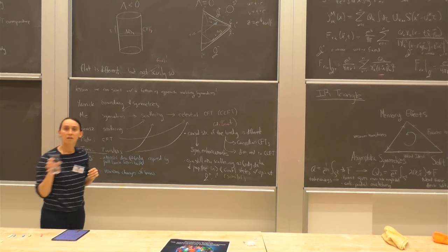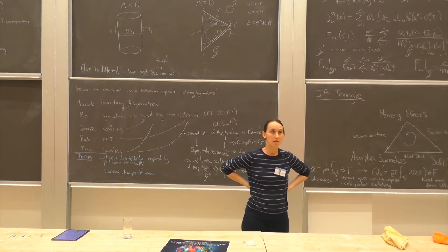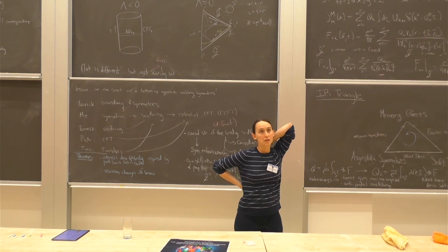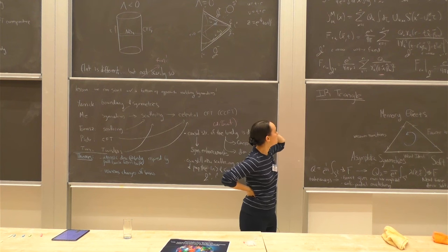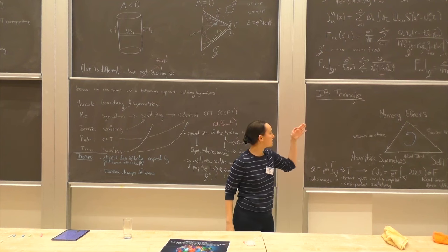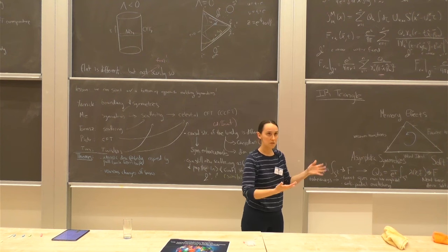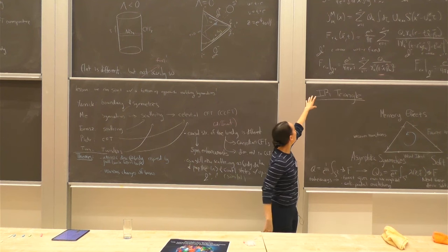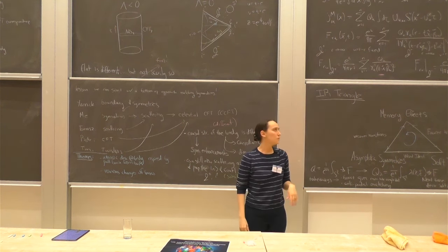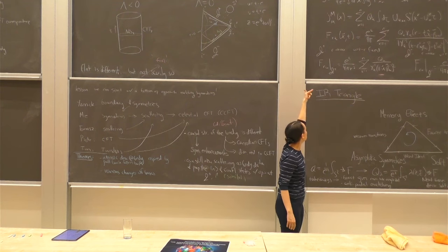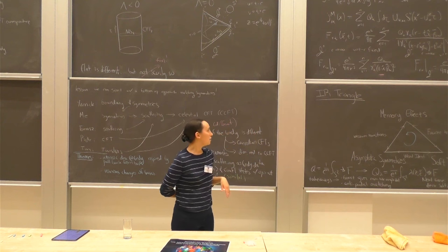For the Liénard-Wiechert picture: radiation is proportional to acceleration, and the time integral of acceleration gives the change in velocity. Intuitively, the zero-mode of the radiation is related to the final minus initial electrostatic configurations of the asymptotically moving charges. If your scattering process is defined by charges starting and ending with certain velocities, just that information tells you how much radiation there was — it doesn't matter how it accelerated, only the initial and final values. That's exactly why there's a Ward identity.